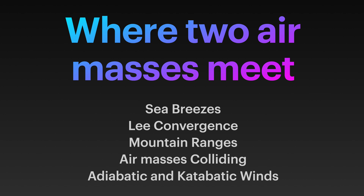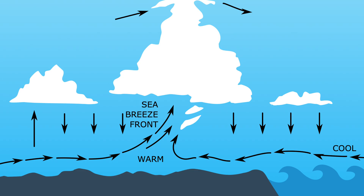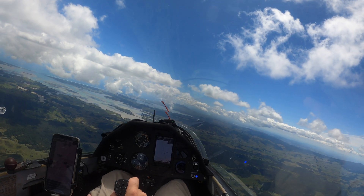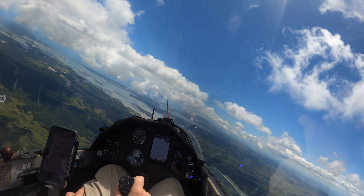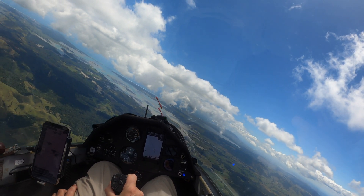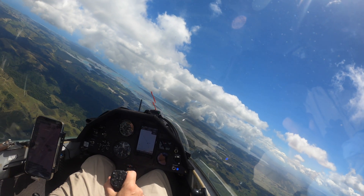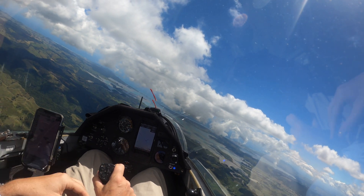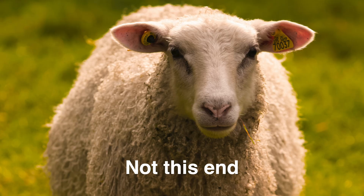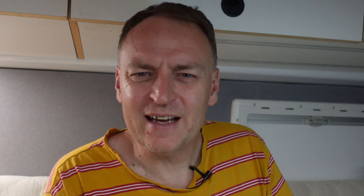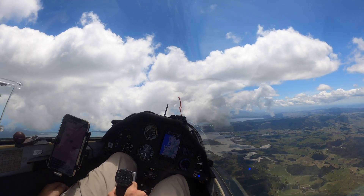Today we're going to look at sea breeze convergences. The sea breeze front is the most commonly known type of convergence, and it's very distinctive and easy to see, thanks to these what we call daggy bits hanging down from the clouds. Dags are affectionately named after what's hanging off a sheep's bum — matted up wool and stuff. We have a lot of that in New Zealand. The little tufts of cloud hanging down off a convergence cloud, we call them dags.